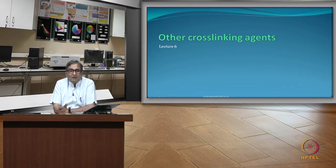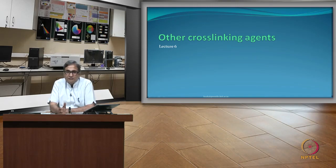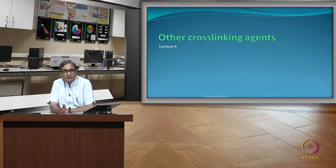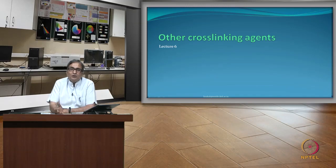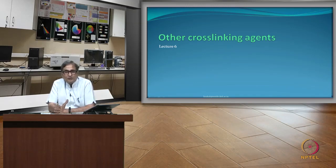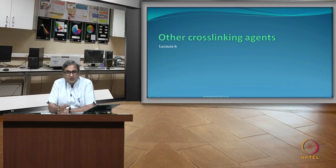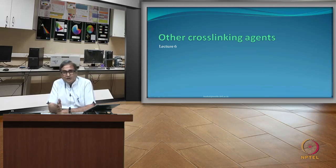Now we shall spend some time on cross-linking agents other than the N-methylol type. What is required is that there should be at least two functional groups so that a covalent cross-link can be formed, establishing the same mechanism of crease recovery.